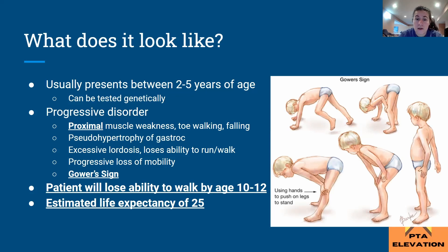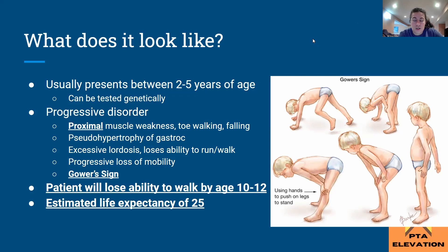It presents first with proximal muscle weakness and toe walking — they're using their gastrocnemius rather than hip flexing, which is where we see pseudohypertrophy start to happen. Because of that proximal muscle weakness, the patient will trip and fall, and will present with excessive lordosis due to weakness of the pelvic muscles. The back muscles get really tight trying to hold themselves up. You'll see that excessive lordosis and anterior pelvic tilt. This patient will probably lose their ability to walk by age 10 to 12, and before that will show a disinterest in running and playing.